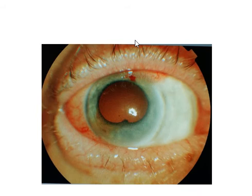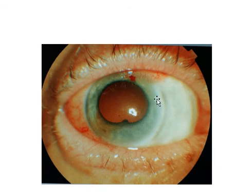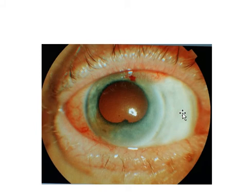On examination, the vision was 6/18 unaided. The lids and lid margins look normal. There is conjunctival redness. The most obvious finding is whitening of the area surrounding the cornea. The structures in this area are the conjunctiva, episclera, and sclera. The cornea grossly looks normal.